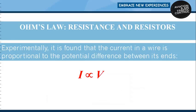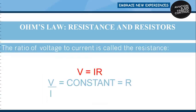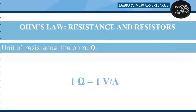Experimentally, it is found that current in a wire is proportional to the potential difference between its ends. This statement is known as Ohm's Law — current is directly proportional to potential difference. The ratio of voltage to current is called resistance. One ohm is the resistance of a conductor through which a current of one ampere flows when a potential difference of one volt is applied to it.